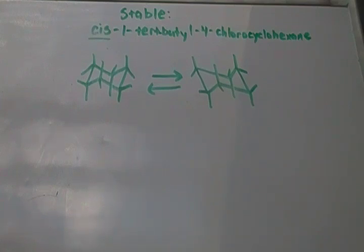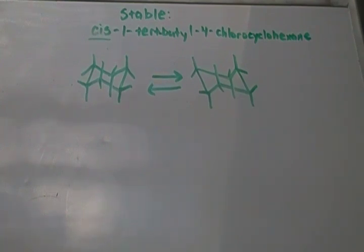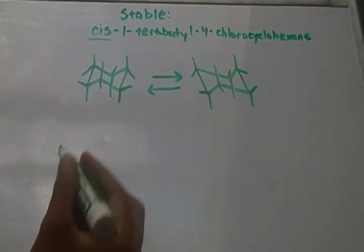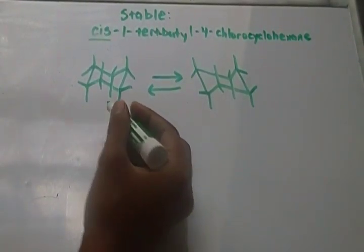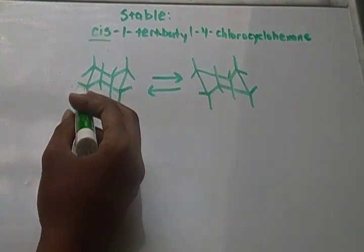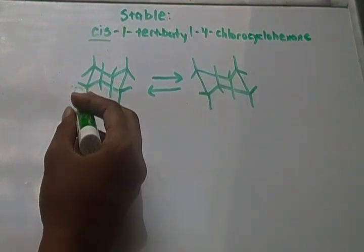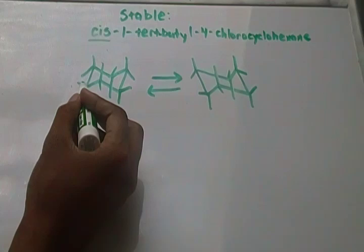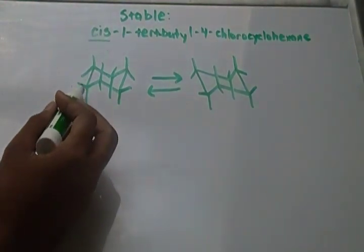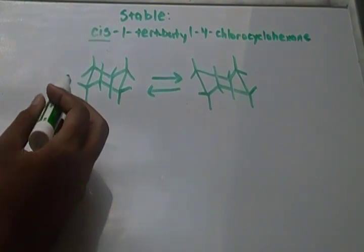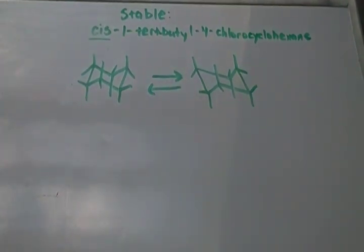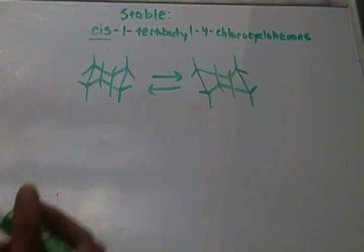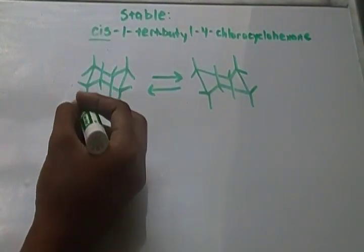So you're going to start out with the first substituent, which is tert-butyl. You're going to put it at the one carbon. Now when you put your first substituent, you can choose any carbon on the ring. I usually just go with this carbon. So I have to put a tert-butyl on this carbon. Which position is it going to go? Is it going to go axial down or equatorial up? When you're putting your first substituent on, it doesn't matter which place you put it — you just have to pick one.